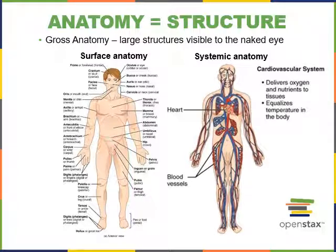Systemic anatomy is the study of structures that work together to perform a common function. Here we see the cardiovascular system, which includes several different organs including the heart, which provides the pumping action to move blood through the blood vessels. The heart and blood vessels work together to deliver nutrients throughout the body and remove waste. Systemic anatomy is the approach of studying organs working together for a common function.